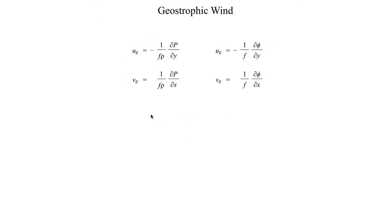Just to refresh your memory, these were the equations that we derived in the previous segment. The zonal component of the geostrophic wind is equal to that. If you're working on a constant height or z-coordinate, that's the formula on the left. If you're working on the same pressure level or pressure coordinate, then this would be the formula used on the right-hand side. On an isobaric surface — a surface of constant pressure — you don't have density; instead of the pressure gradient you have the gradient in geopotential height or geopotential. Whereas on a constant z-level you work with the pressure gradient. So those two forms of the geostrophic wind must be kept very distinct.